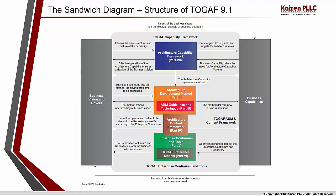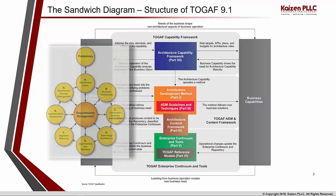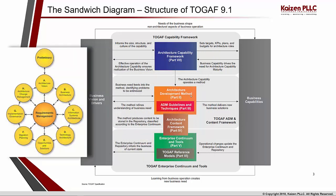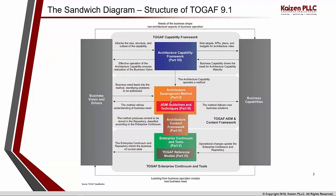The architecture capability operates a method — the Architecture Development Method (ADM). Depending upon the enterprise architecture practice, the roles, and the tools you have, you determine how you want to operate the method. The method is comprised of many different phases. The business vision and drivers give input to the method, providing requirements in terms of identifying problems to be addressed. When you run these requirements through the method, it delivers new business solutions.